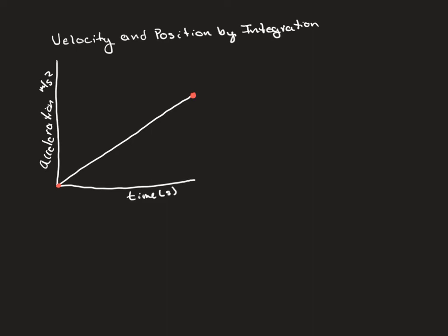In this lecture video we are going to explore how velocity and position can be found by integration. What I have here is an acceleration versus time graph and I've drawn a line that represents how the acceleration changes as a function of time. I could have also given you a function that if you plotted it you would end up with this line.